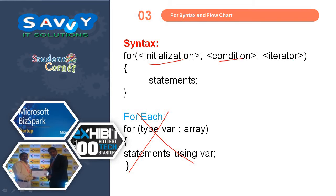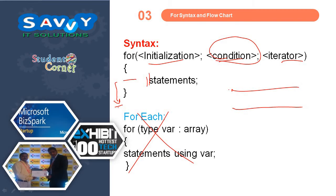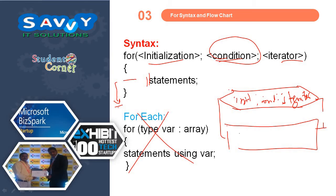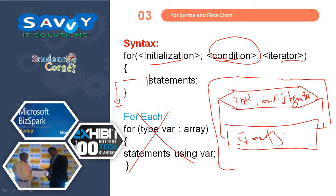For the for loop: initialization, condition, and iterator — the statements are given together. If the condition is true the statements are executed; if the condition is false then it exits the block. The flowchart is: initialization, condition, statements, iterator. When compared to the other two flowcharts, this flowchart represents a simpler approach.